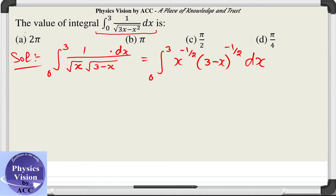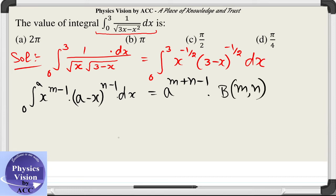Now we will make use of one property of beta gamma function that the integral of 0 to a, x power m minus 1 into a minus x power n minus 1 dx, is equal to a raised to the power m plus n minus 1 into beta of m comma n.